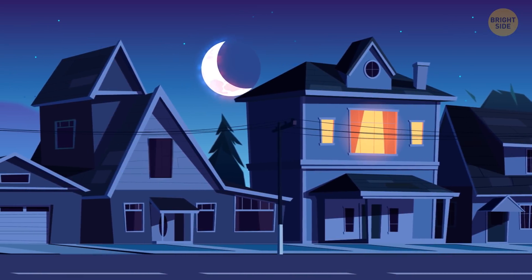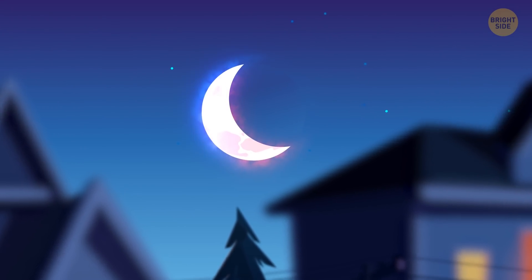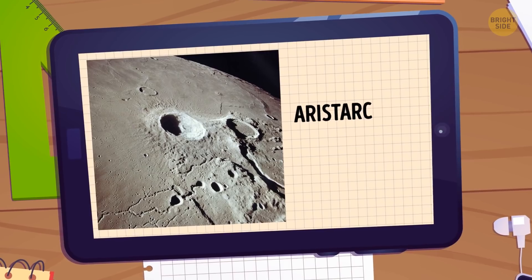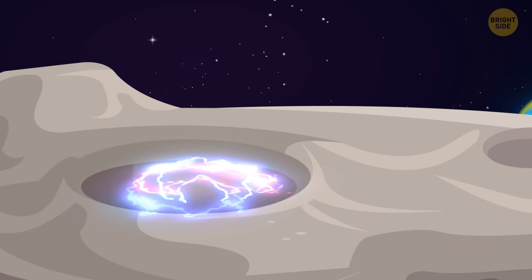Another unusual phenomenon is the blue and red lights on the Moon. They can be seen when it's horn shaped. And this occurs most often in the Aristarchus crater. The flashes come and go very quickly, almost like lightning.